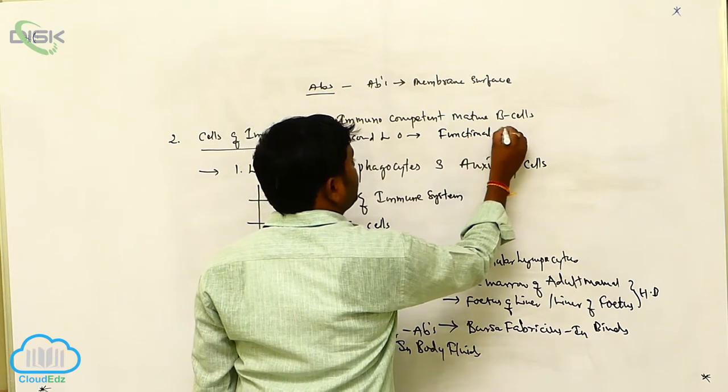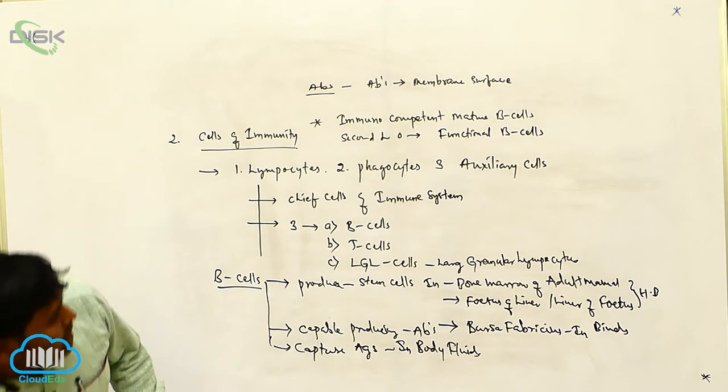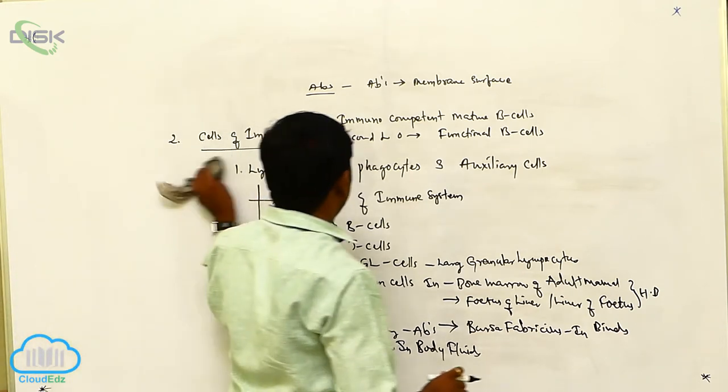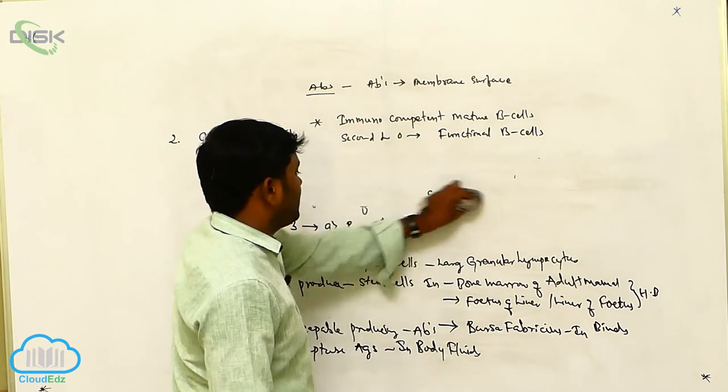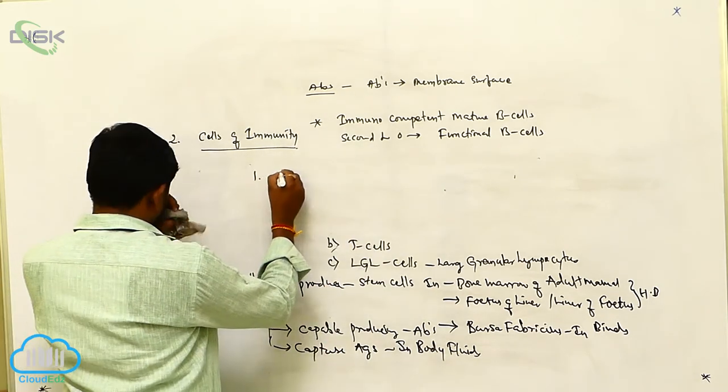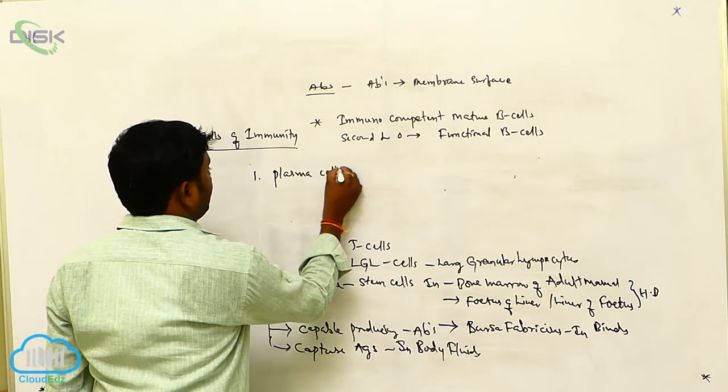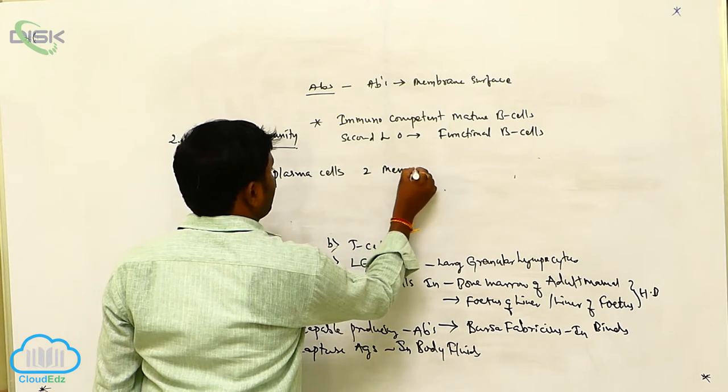These functional B cells can differentiate into two cells: one is plasma cells and the second is memory B cells.